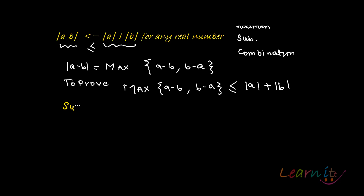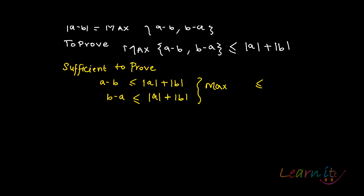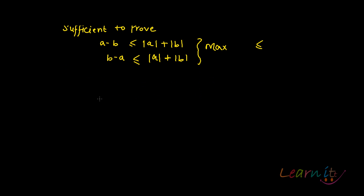It suffices to prove that each of the two terms inside the max is less than or equal to the RHS. That is: a minus b ≤ |a| + |b|, and b minus a ≤ |b| + |a|. If both hold, then the max is also less than or equal to the RHS. That is why we will try to prove what is sufficient for us to prove.